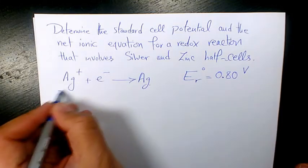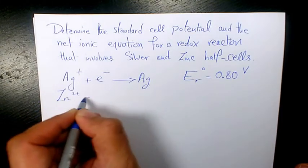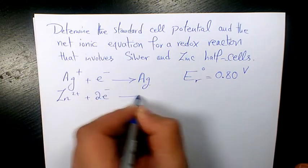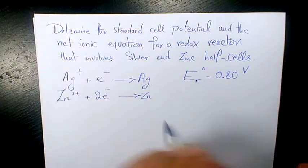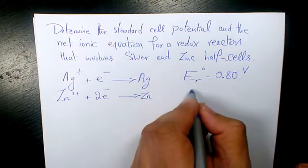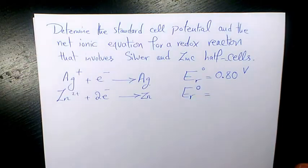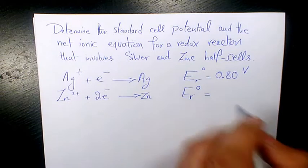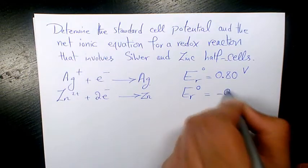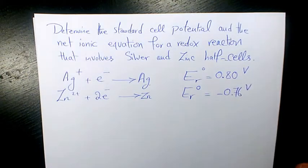On the other hand, we have zinc: Zn2+ plus two electrons is going to give me Zn, and the standard reduction potential is going to be negative 0.76 volts.